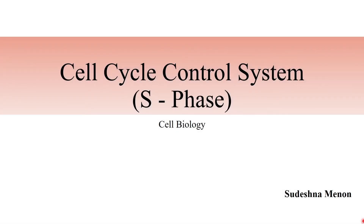Cell cycle control system, especially at the S phase, which is part of the interphase of the cell cycle. It is during the S phase that there is active DNA replication. If a cell has begun to replicate its DNA, that means the cell is committed to cell division. Let us look at what control is present during the S phase of the cell cycle.